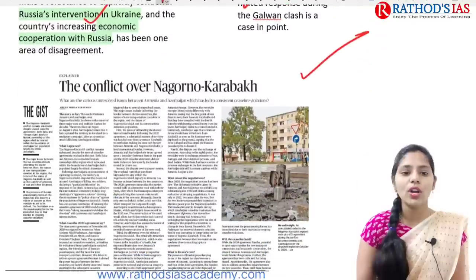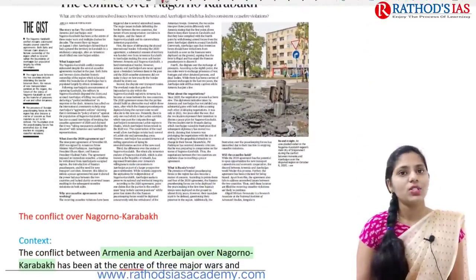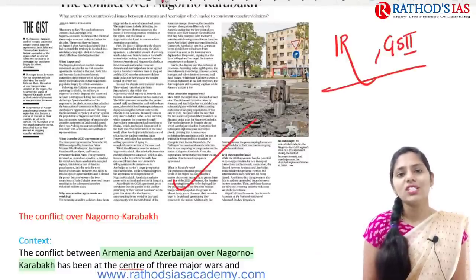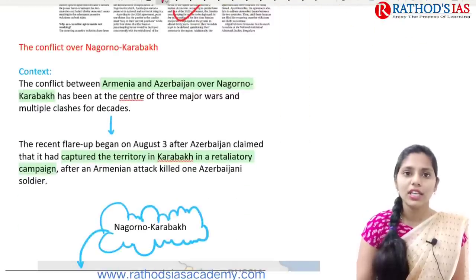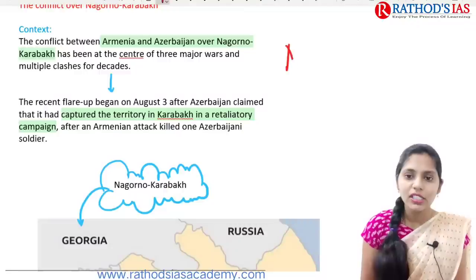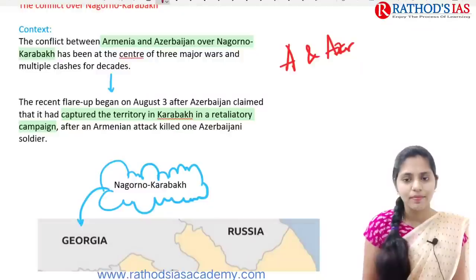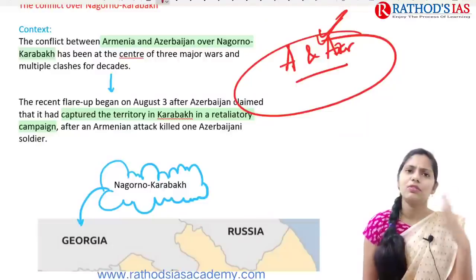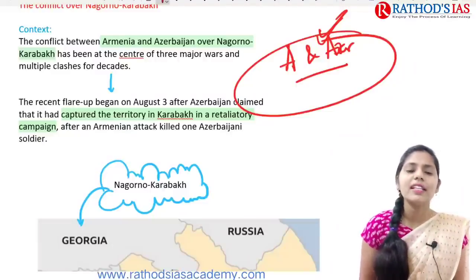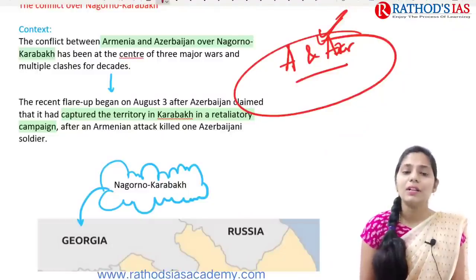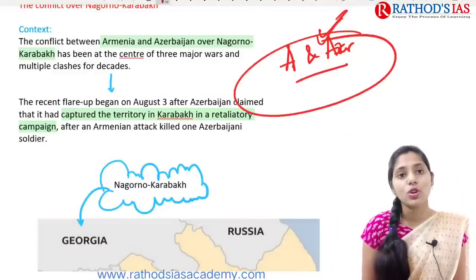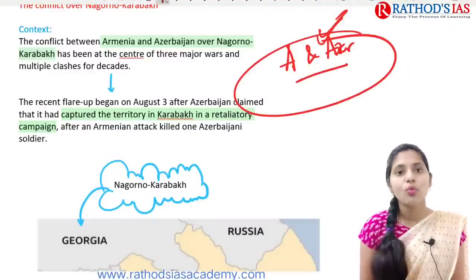The next topic is regarding the conflict over the Nagorno-Karabakh region. This topic is also important from international relations under GS Paper 2. The context is that this is the issue between Armenia and Azerbaijan. Recently there was again an eruption of conflict — this is a very, very old conflict. This region has been the center of three major wars and multiple clashes between Armenia and Azerbaijan for decades.